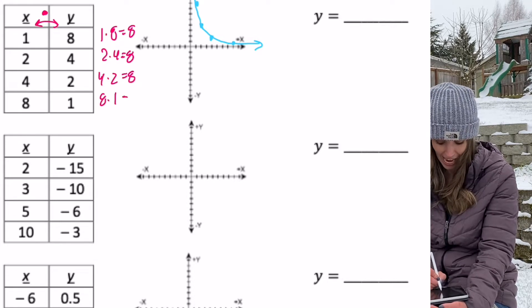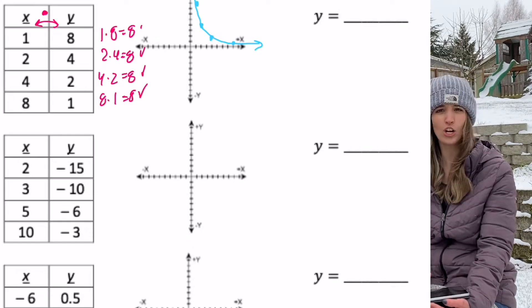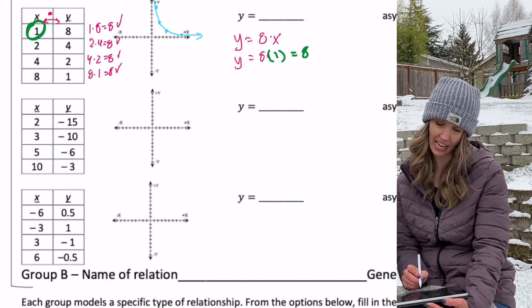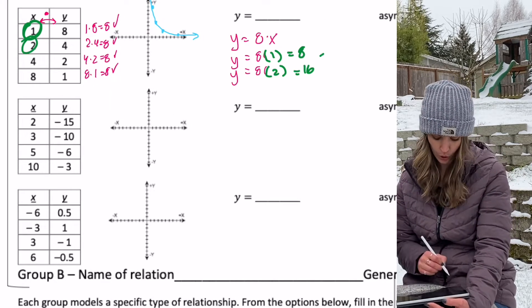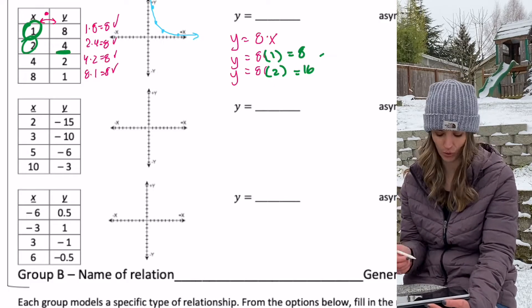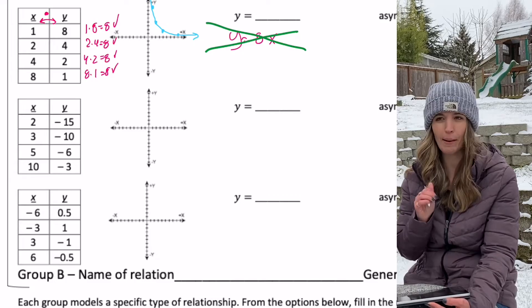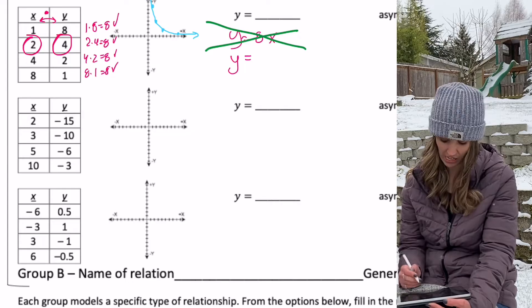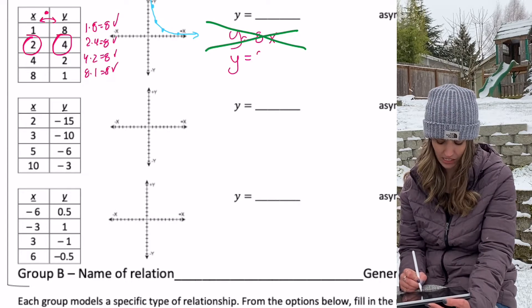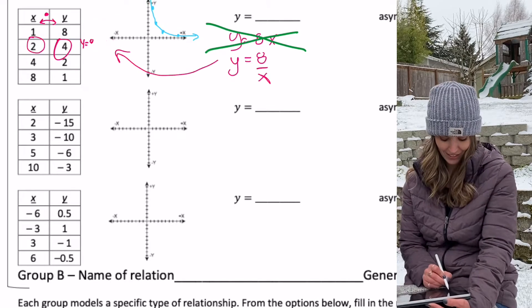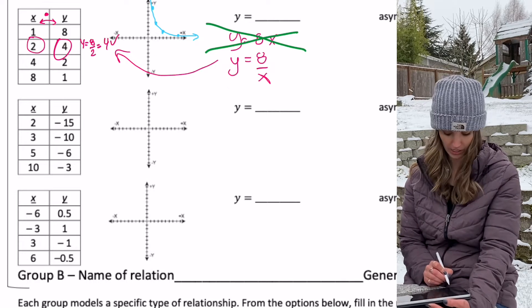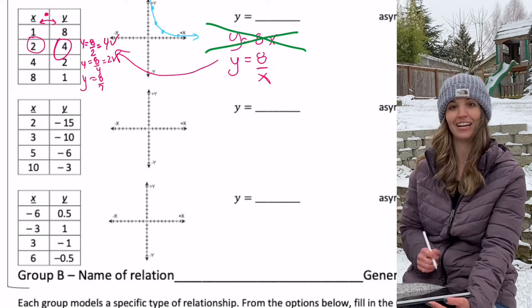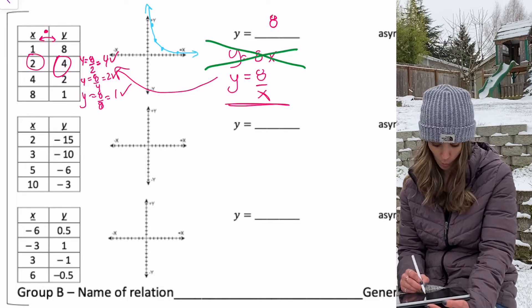Maybe 1 times 8 is 8, 2 times 4 is 8, 4 times 2 is 8, 8 times 1 is 8 — it's working! So could I do y equals 8 times x? If I plug in 1 I get 8, that's true. But if I plug in 2, I get 16, not 4. Maybe division — y equals 8 divided by x. Then 8 divided by 2 is 4, that works. 8 divided by 4 is 2, 8 divided by 8 is 1.